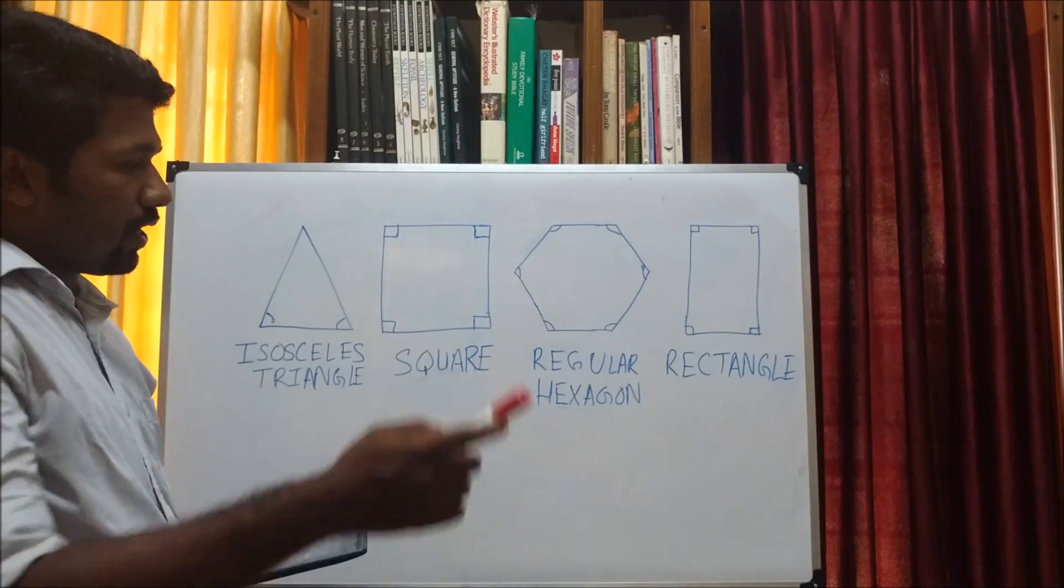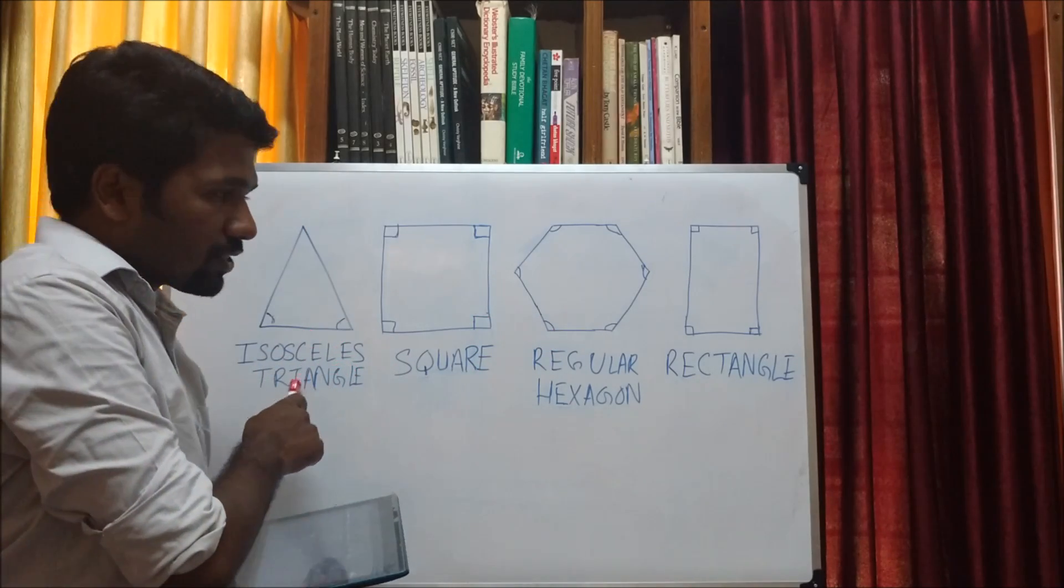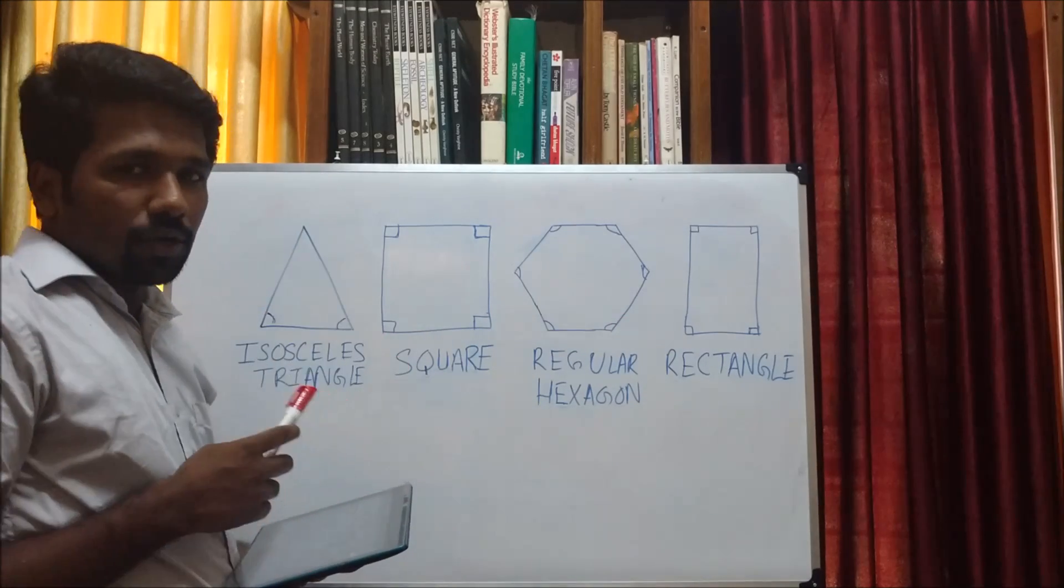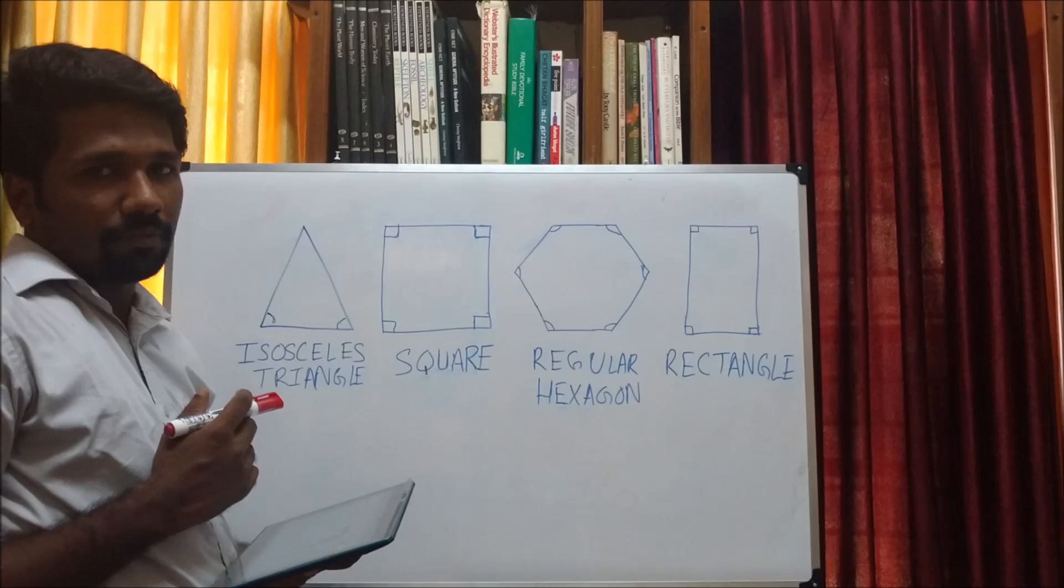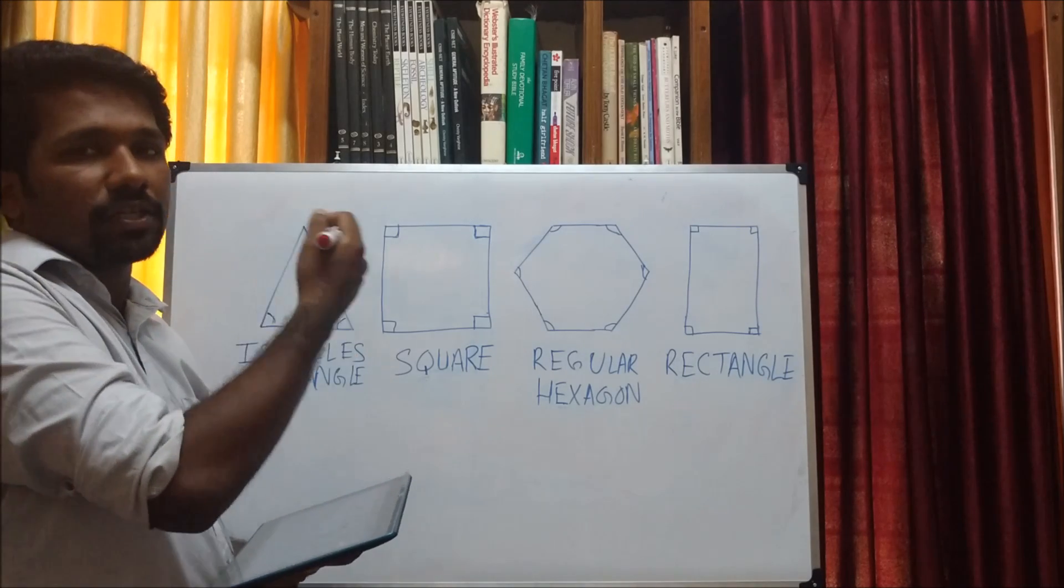That means the square and regular hexagon have all of their sides equal, but for the isosceles triangle and rectangle, all their sides are not equal. That means we cannot pick an odd one out based on the length of the sides of these shapes.